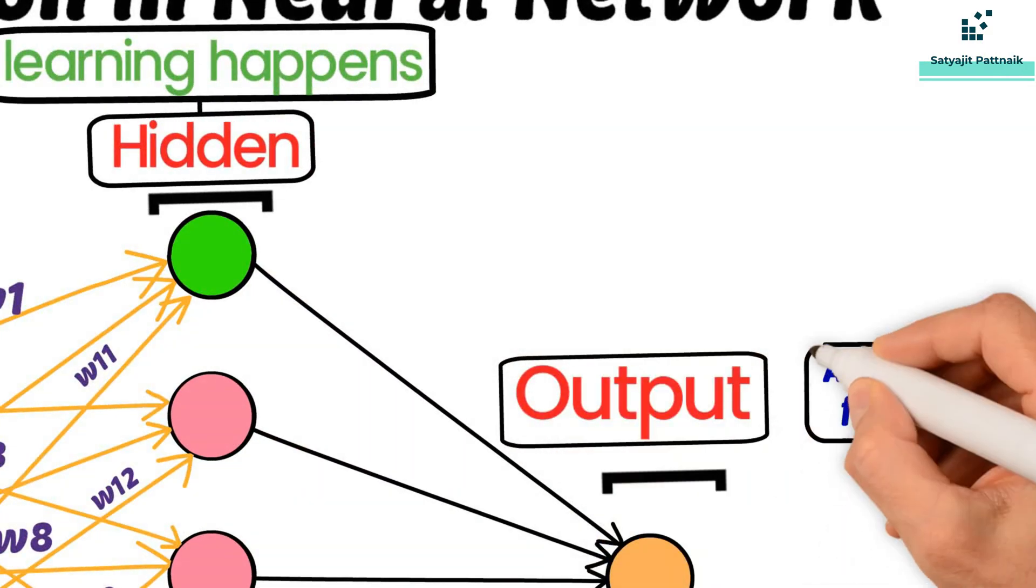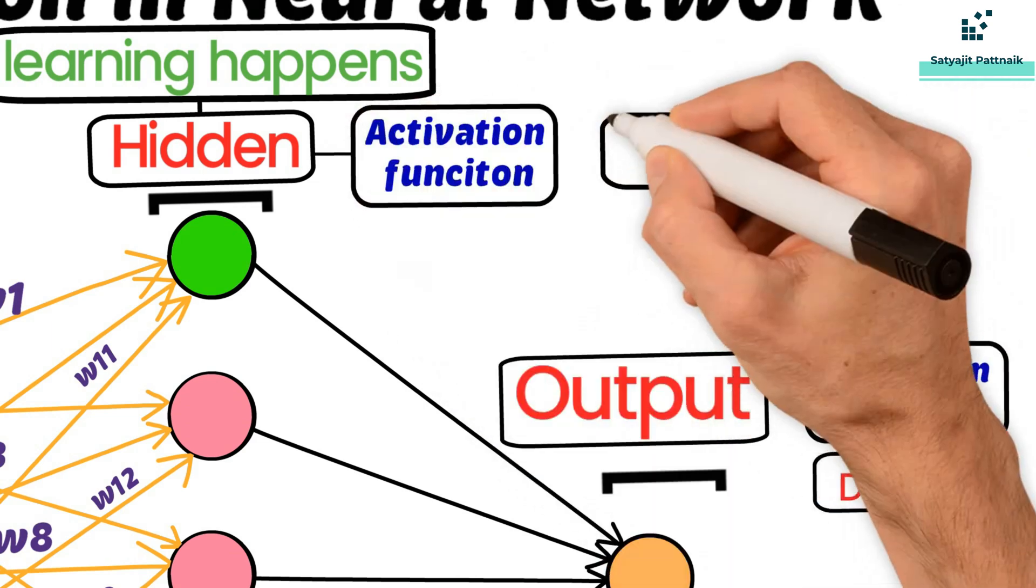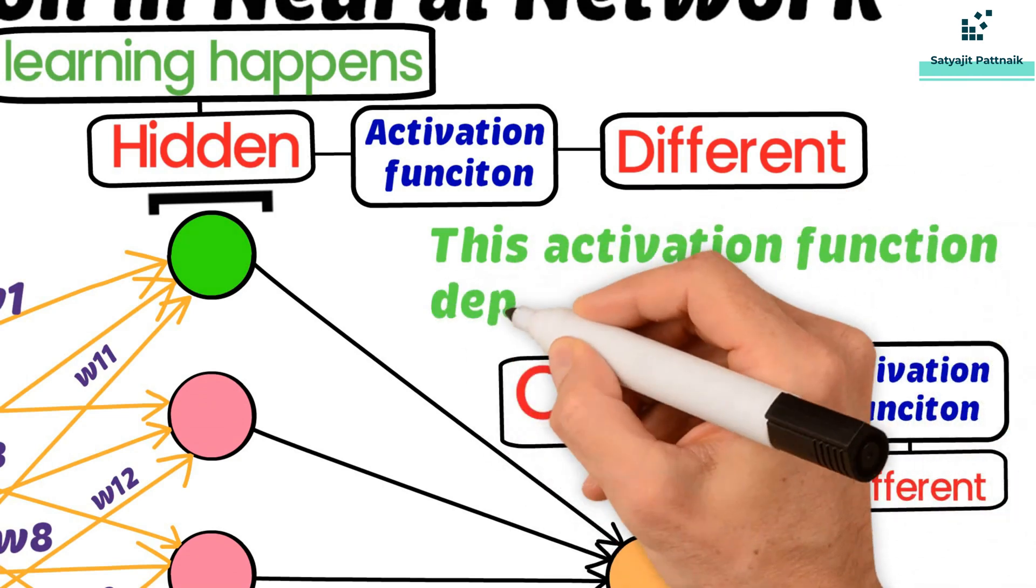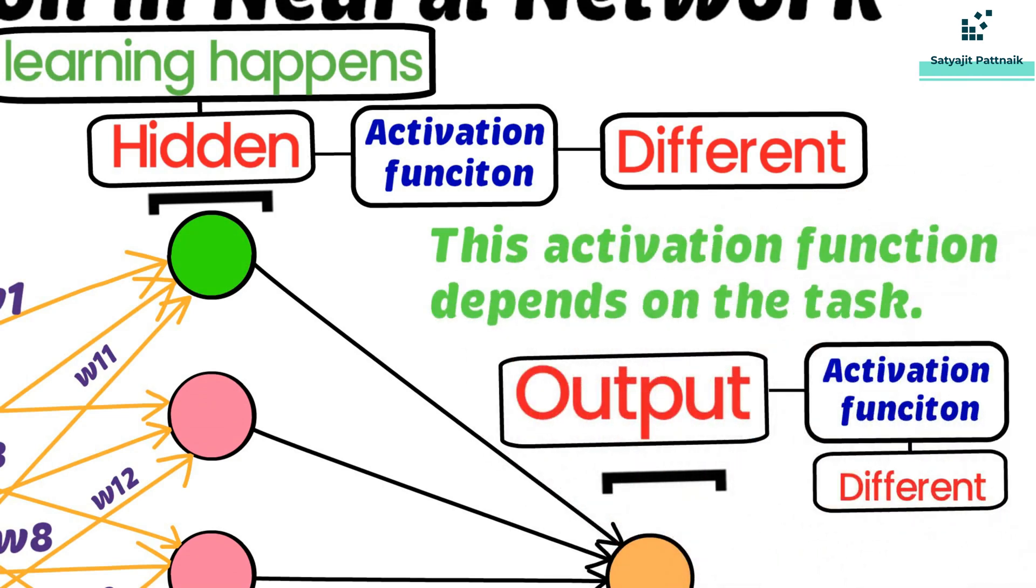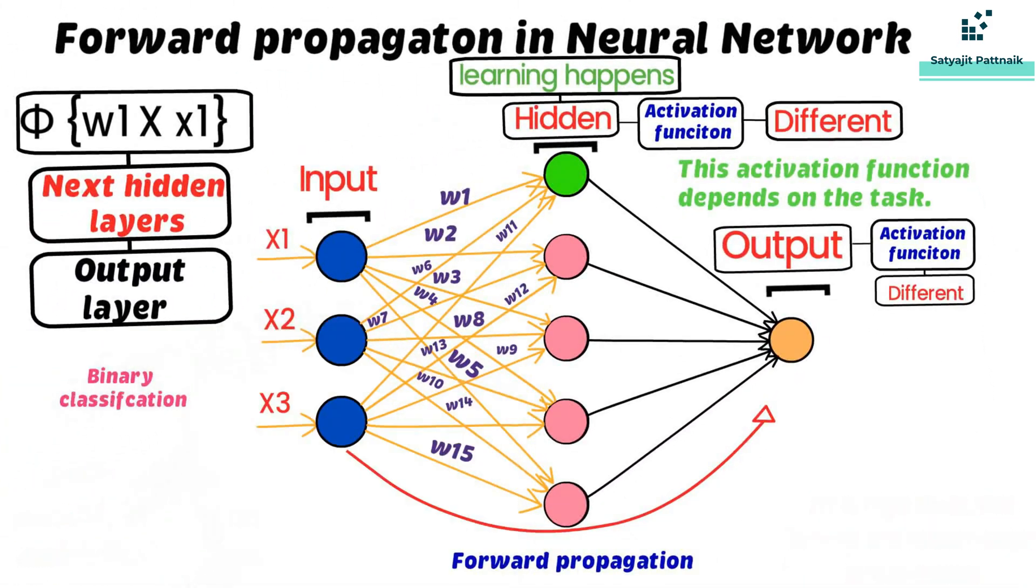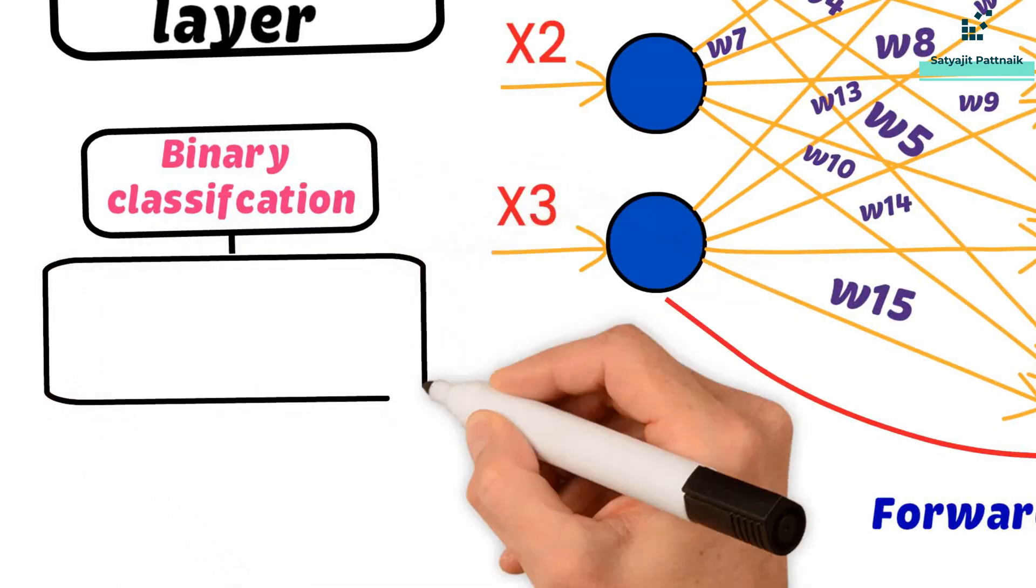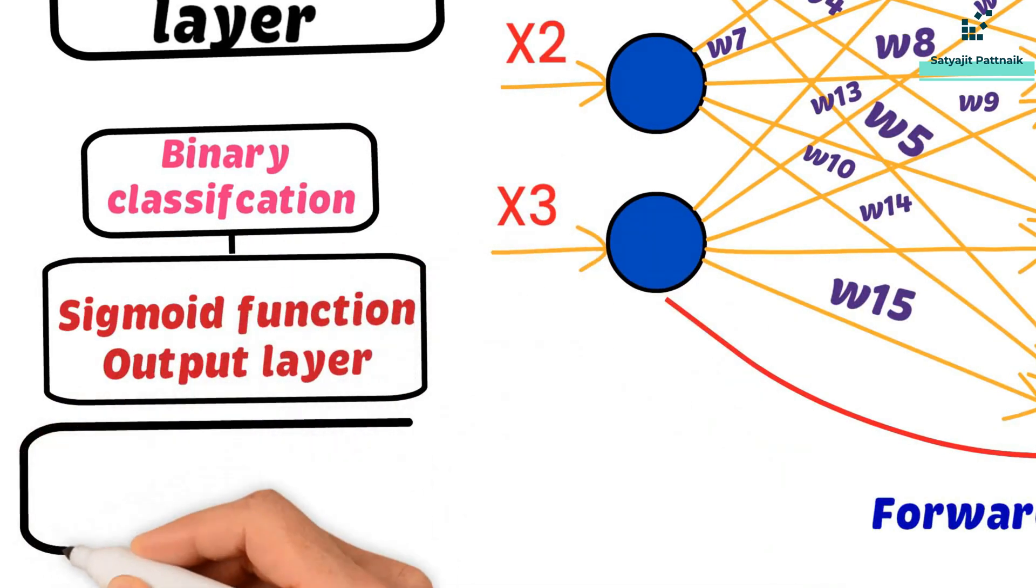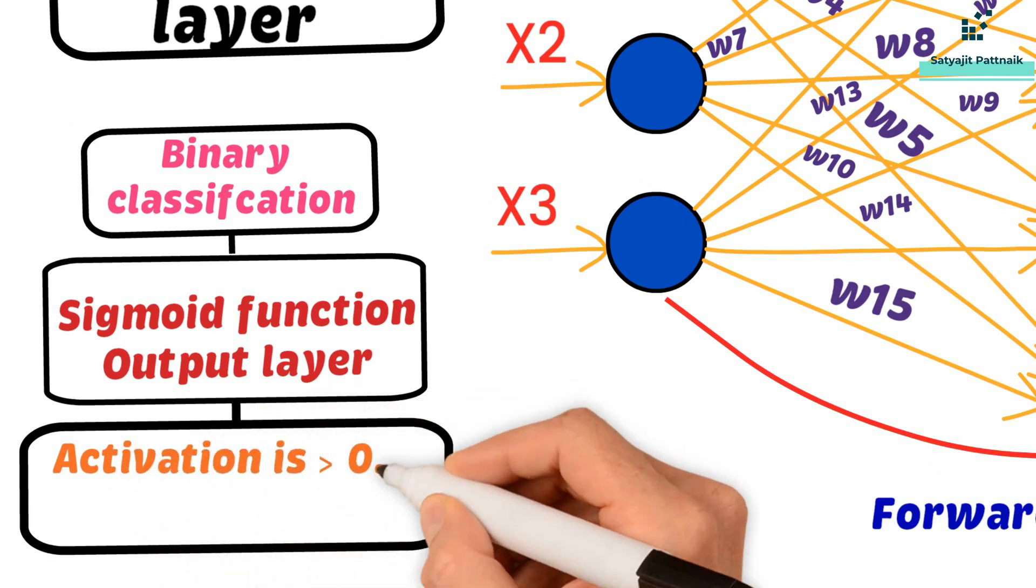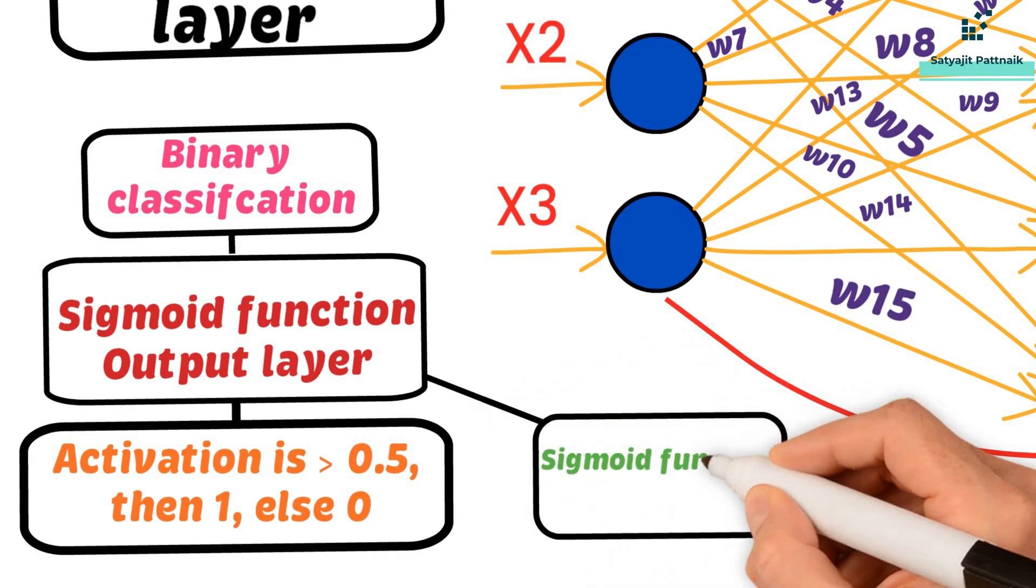In the output neuron, the activation function is different from the activation functions used in the hidden layer neurons. This activation function depends on the task which we are doing. For example, if we are doing binary classification, we can use a sigmoid function at the output layer. If activation is greater than 0.5, then 1, else 0, because sigmoid function ranges between 0 and 1.